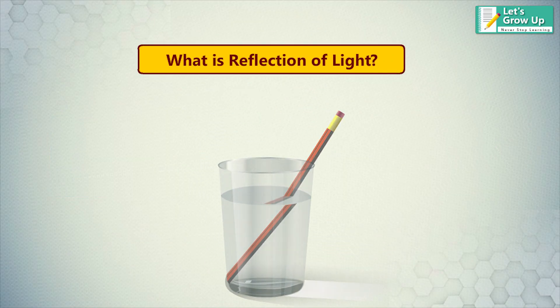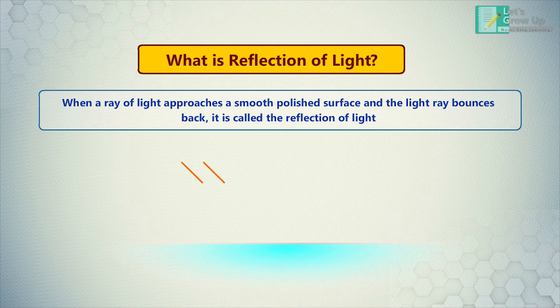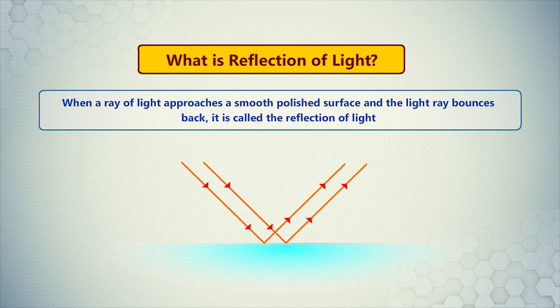What is reflection of light? When a ray of light approaches a smooth, polished surface, and the light ray bounces back, it is called the reflection of light.